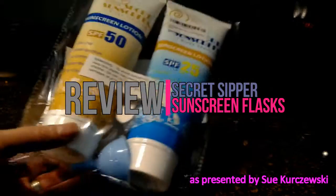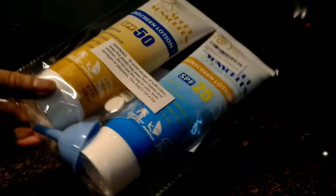Hi, this is a review for the Secret Sipper sunscreen flasks. The package includes two 9.7 ounce Secret Sipper flasks and they're in a protective cellophane bag.